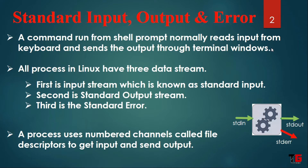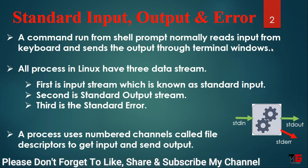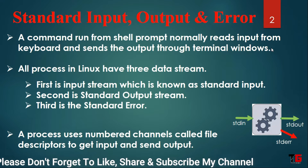When we run a command from the shell prompt, normally it reads the input from the keyboard and sends the output to the screen, meaning the terminal window. All the processes in Linux have three data streams: the first is known as input stream, second is standard output stream, and third is standard error stream.